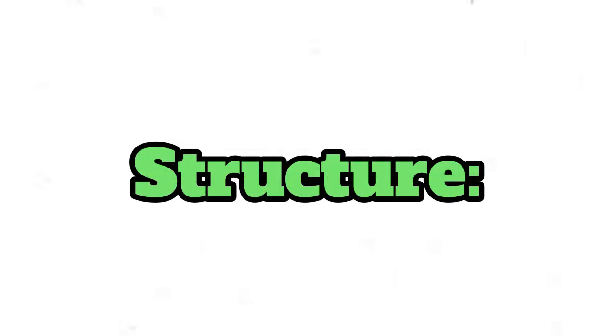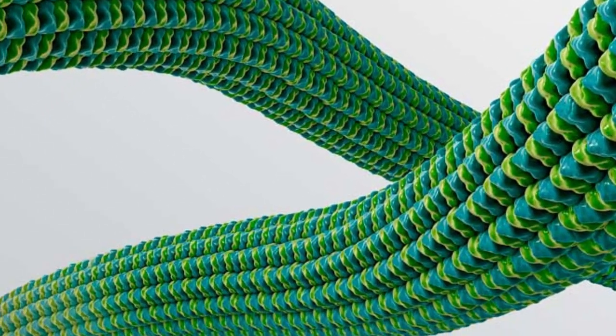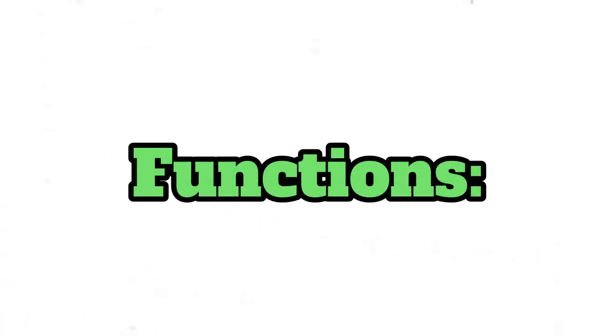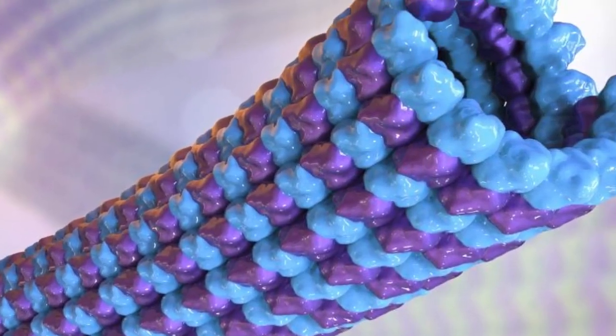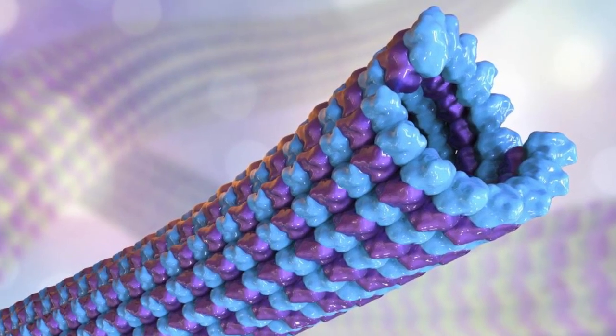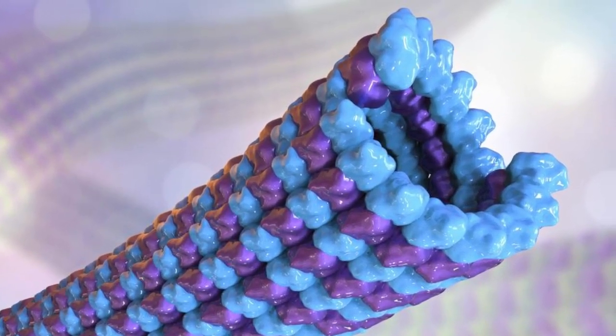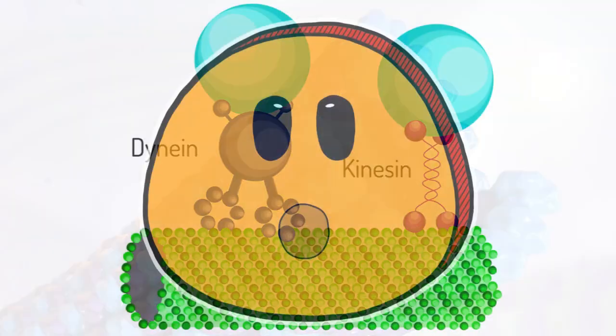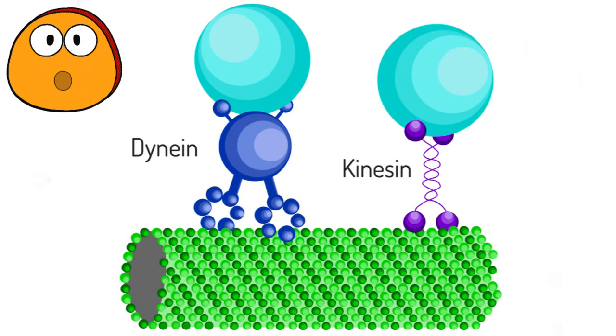Microtubules, the cell's highways. Structure: hollow tubes made of tubulin protein. Functions: acts like tracks for moving organelles and vesicles, forms the mitotic spindle during cell division, builds cilia and flagella which helps cells move. Fun fact: inside your cells, tiny molecular motors, dynein and kinesin, walk along microtubules carrying cargo like little delivery trucks.